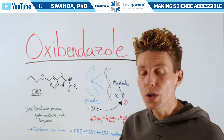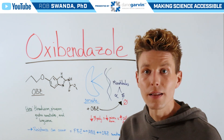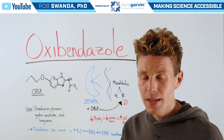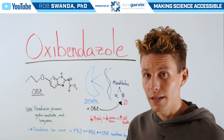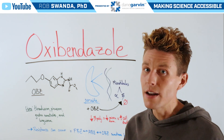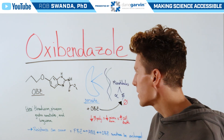Nutrient transport is also inhibited, so things like glucose are not moved around the cell as needed. Therefore we see increased amounts of cell death and eventually death of the parasite.